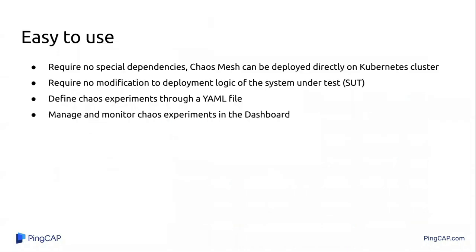Chaos Mesh is very easy to use because it's based on Kubernetes. You can deploy it directly on a Kubernetes cluster — it requires no other special dependencies. Your system under test doesn't need to know anything about Chaos Mesh, and you don't need to modify your deployment logic. If you want to do a Chaos experiment, you can simply provide a YAML config file, or if you don't want to edit the file, you can also use the dashboard to run the Chaos experiment.